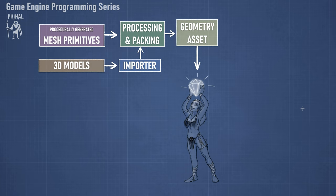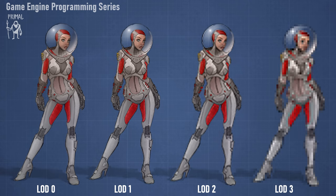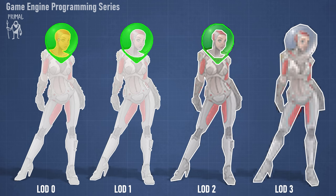The whole purpose of this geometry pipeline is to take raw content and condition it into an asset that the engine is happy to use. I would like to start by defining various kinds of primitive meshes: a plane, a cube, a UV sphere (a regular sphere), an icosphere (which consists of regularly distributed triangles), a cylinder, and a capsule. If you look at a game character, the farther it is from the camera the more pixelated the rasterization will be, so we can see four levels of detail based on camera distance.